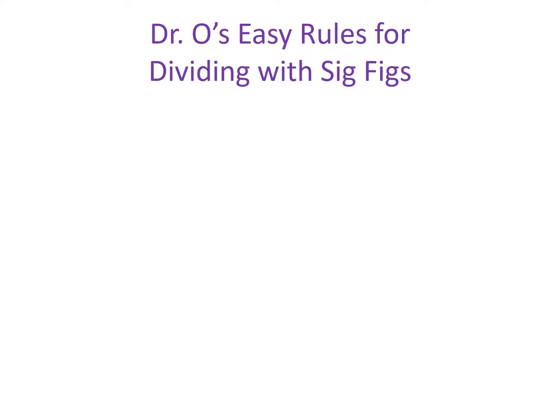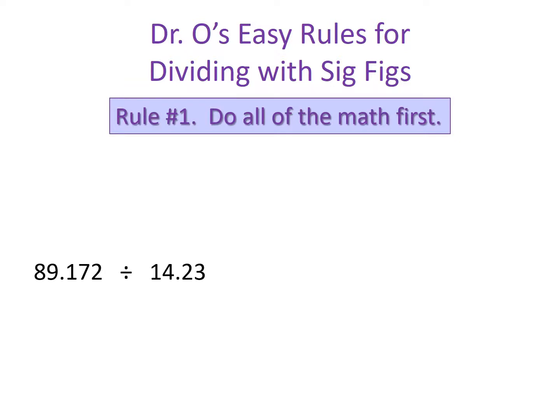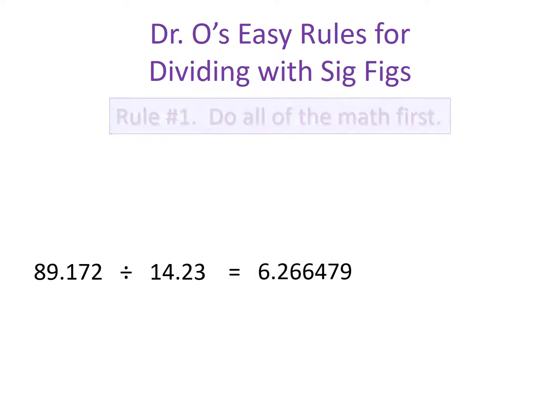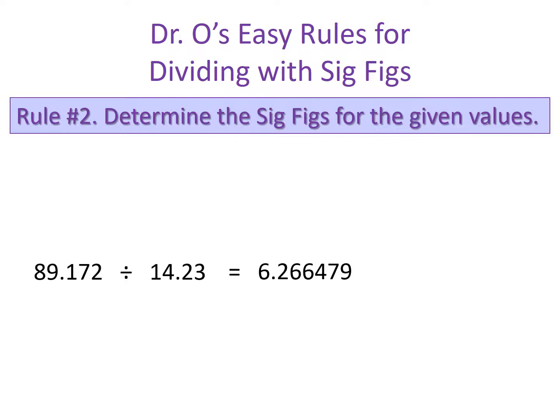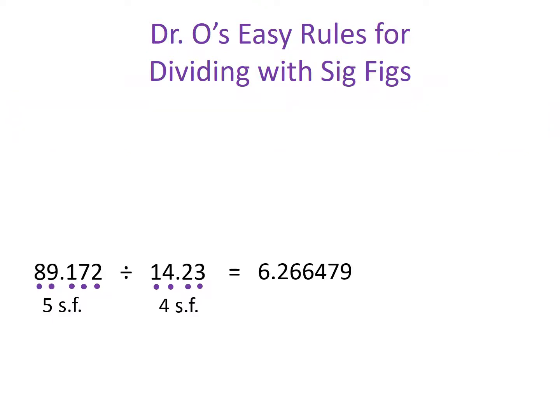Let's do one more division problem. Here we have 89.172 divided by 14.23. Rule number one — do all the math first. Our quotient is 6.266479, and with that we're done with rule number one. Rule number two says determine the significant figures for the given values. Our first given value has five significant figures, and our second given value has four significant figures.